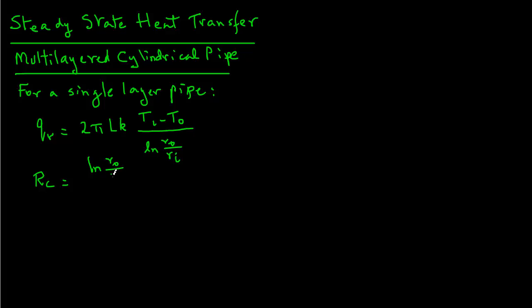In the numerator, we have natural log of Ro over Ri divided by 2πLk.